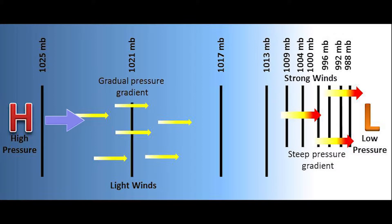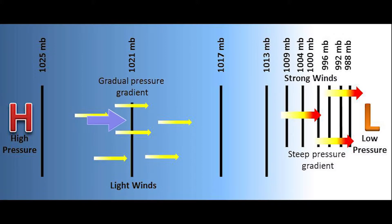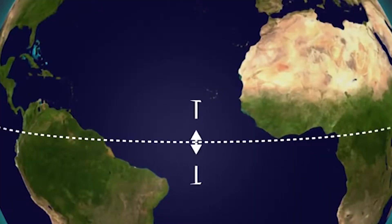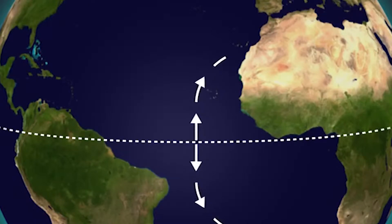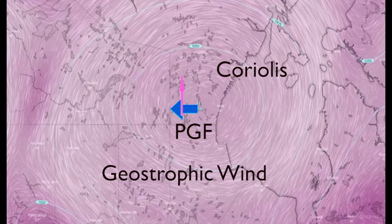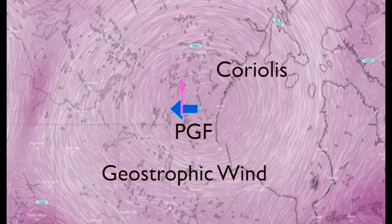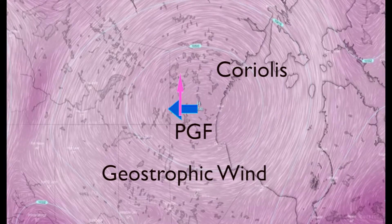An air parcel initially at rest will move from high pressure to low pressure because of the pressure gradient force. However, as that air parcel begins to move, it is deflected by the Coriolis force to the right in the Northern Hemisphere or to the left in the Southern Hemisphere. As the wind gains speed, the deflection increases until the Coriolis force equals the pressure gradient force.